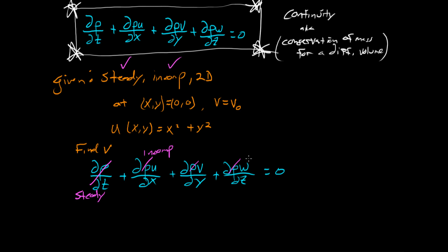And lastly, it's 2D. Let's work in x and y and let z go away. And so the version of this equation that we need to solve is du dx plus dv dy equals zero, which we can rearrange slightly.